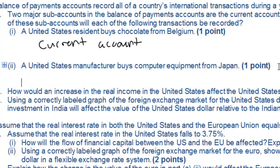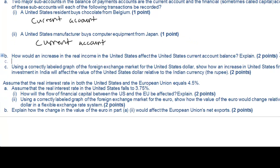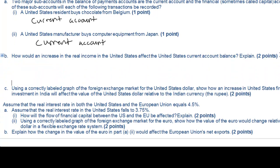The next one however tries to trick us. It says an American manufacturer buys computer equipment from Japan. Now computer equipment is capital equipment, but it is a finished good, therefore it is again measured in the current account.